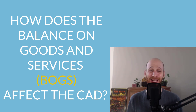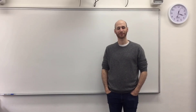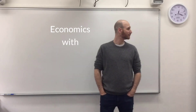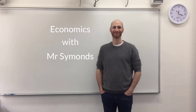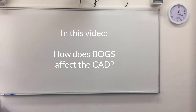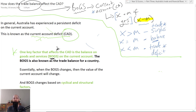It's a bit tricky — there's a lot going on — but I feel like we can work through this together. One key factor that affects the current account deficit is the balance on goods and services on the current account.